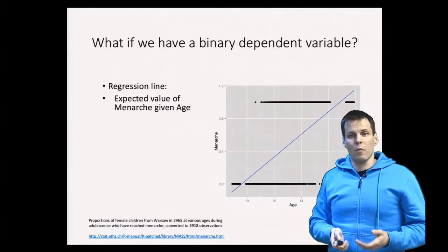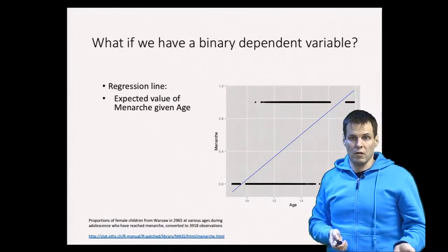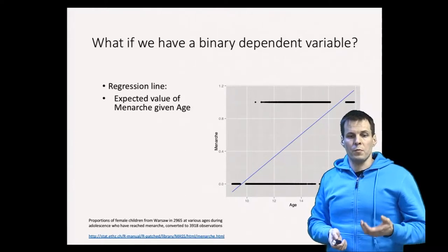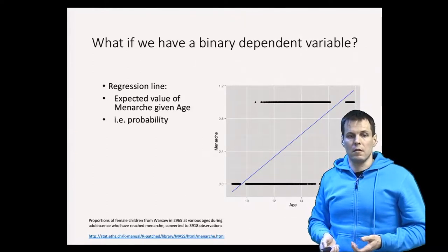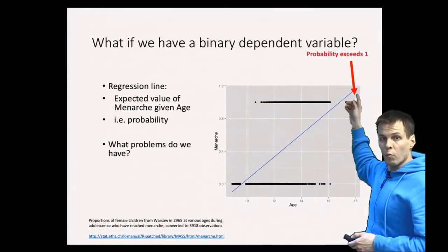There are a couple of problems when we apply normal regression analysis for this kind of dataset. The first problem is that the regression line here goes over one.